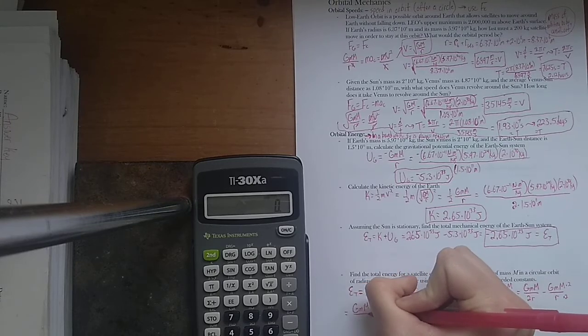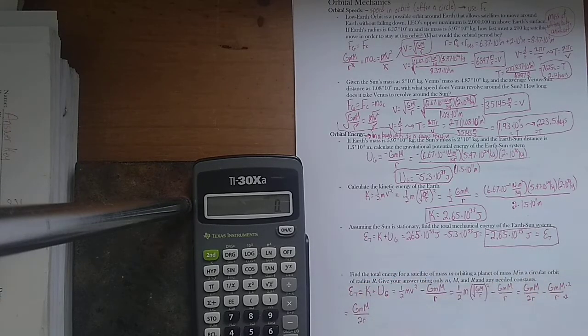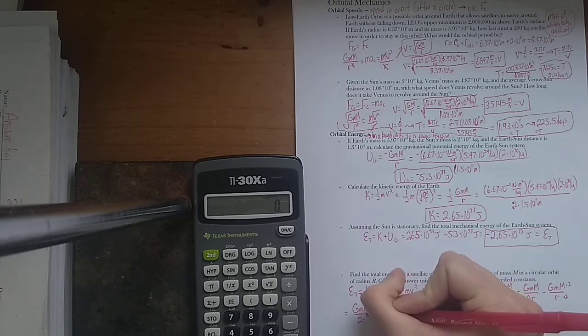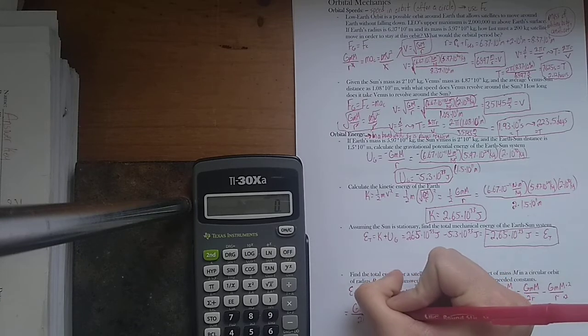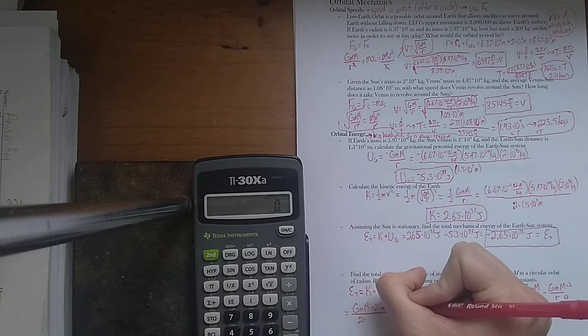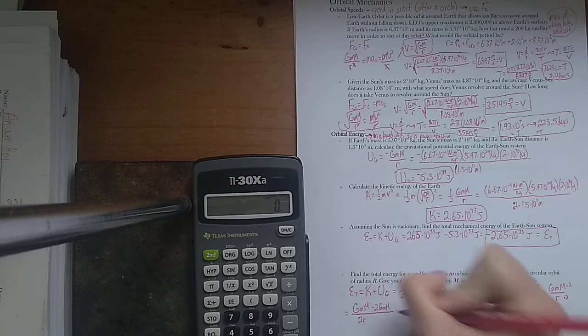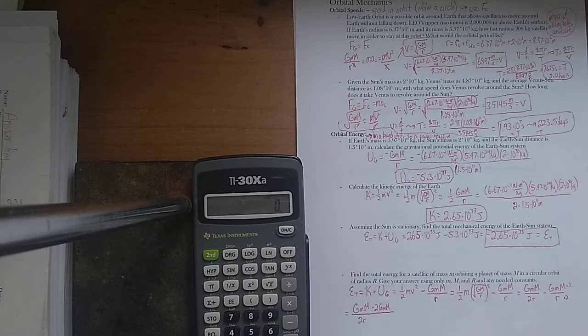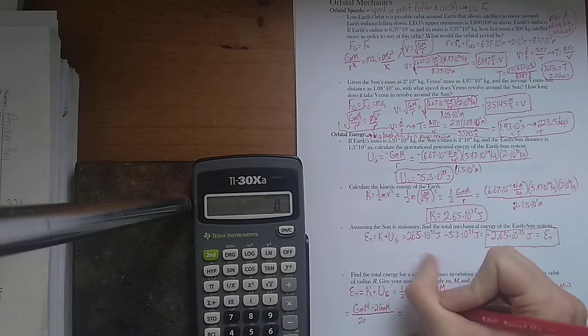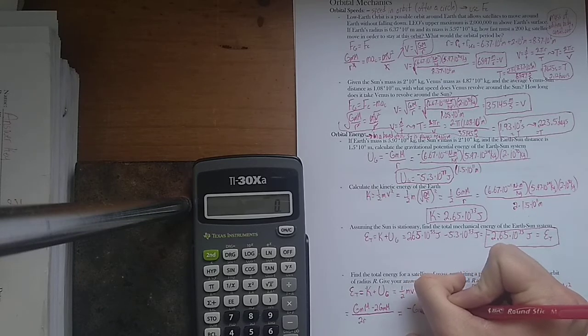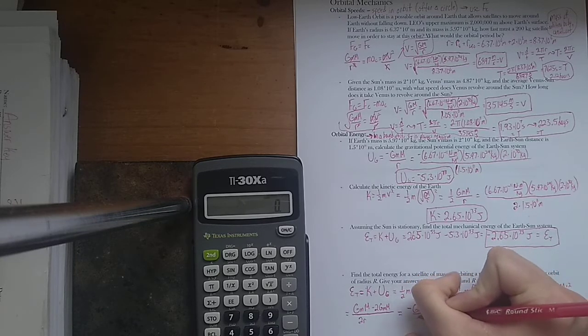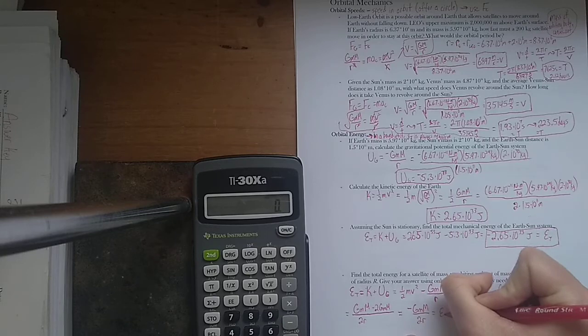G little m, big M, over 2R. Actually, 2R is the entire denominator, so I can just do minus 2G little m, big M. And G times little m times big M, let's just treat that as one term. Imagine that this was like x and this was minus 2x. What's x minus 2x? Well, it's negative x. So that means I'm left with negative G m, big M, over 2R is the total energy.